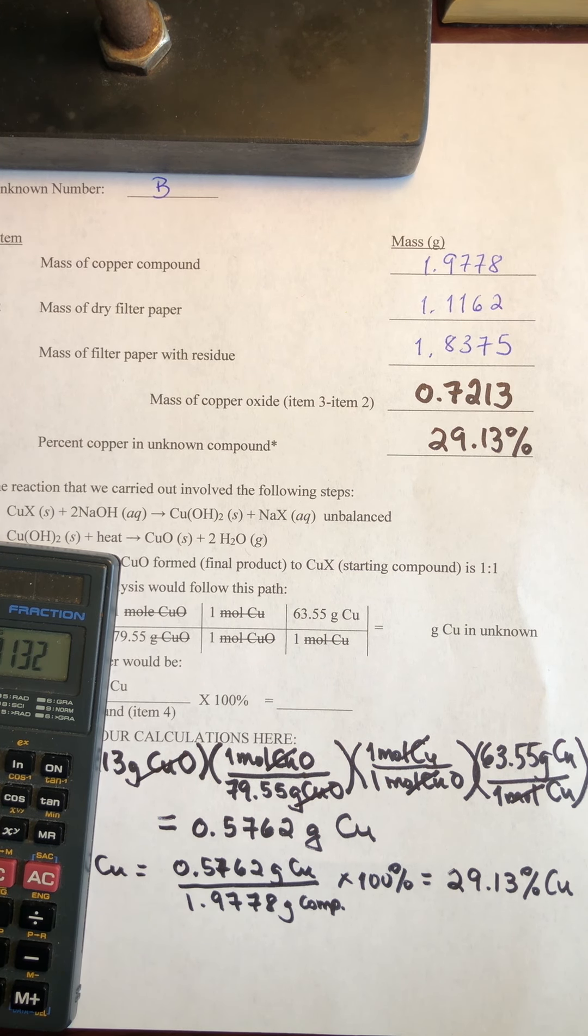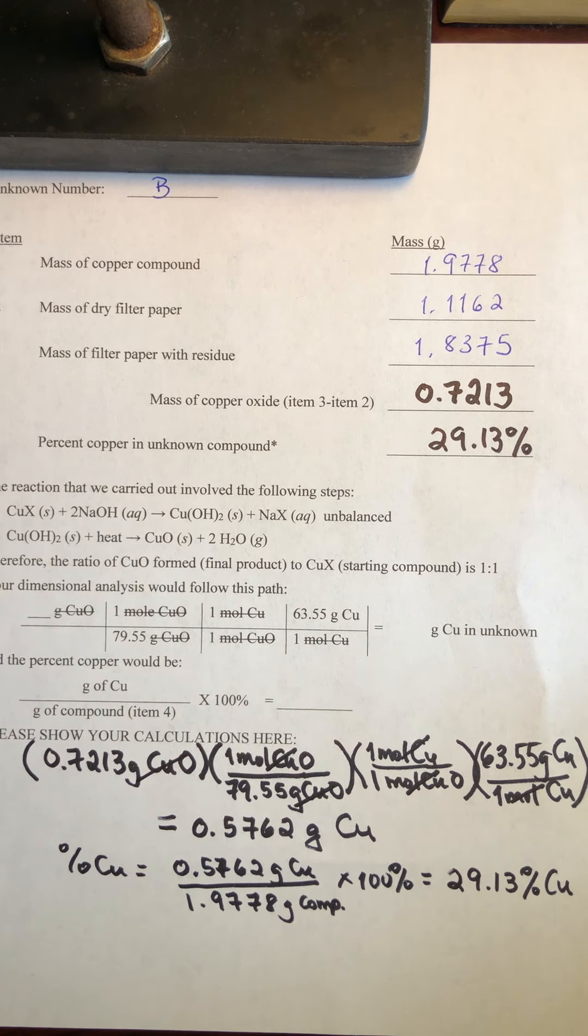So the next step is going to have to be, let's see what were the candidates that we were given. In other words, what were the possible identities of our compound? And let's see which of those would match the percent copper that we found in this experiment.